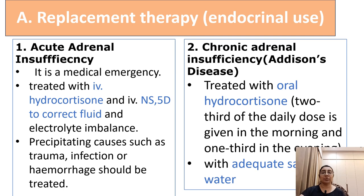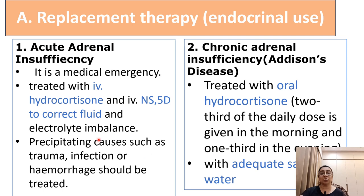First is acute adrenal insufficiency. It is an emergency condition and it can be treated with intravenous hydrocortisone and intravenous fluid replacement therapy with normal saline and 5% dextrose to correct fluid and electrolytes. It can be precipitated due to trauma, infection, and hemorrhage.